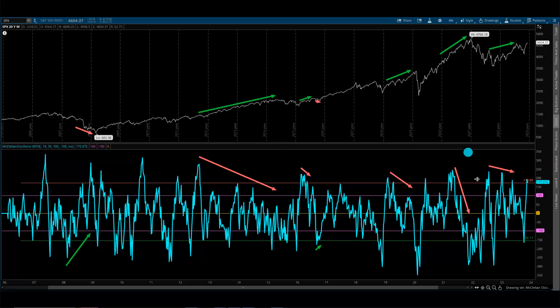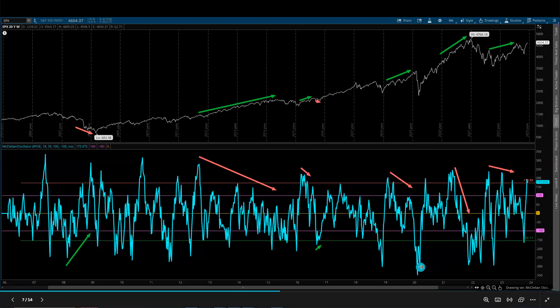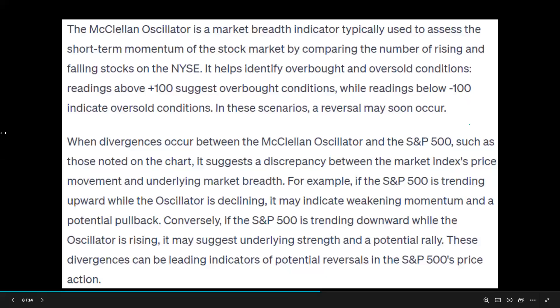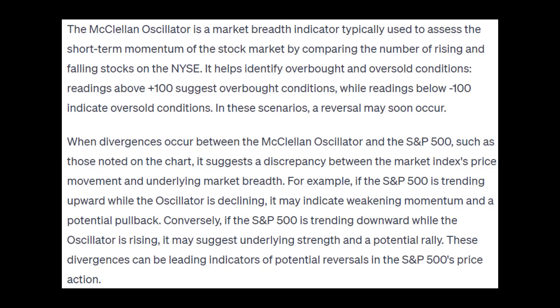It is also useful for telling when things are maybe a little too frothy when we're all the way up at the high end, and maybe you don't want to be aggressively shorting things when we're really low on the oscillator either. The McClellan Oscillator is a market breadth indicator typically used to assess the short-term momentum of the stock market by comparing the number of rising and falling stocks on the New York Stock Exchange. It helps identify overbought and oversold conditions — readings above 100 suggest overbought, while readings below negative 100 indicate oversold.